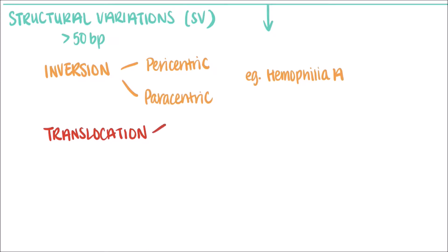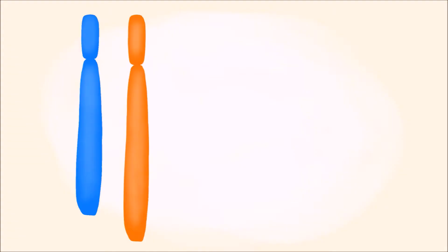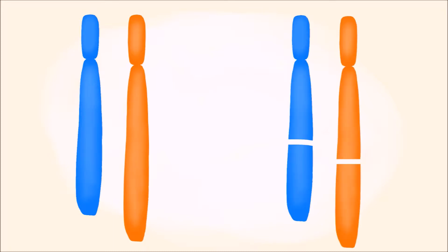Like inversions, there are two types of translocations. Reciprocal translocations are when two chromosomes swap regions of their genetic material. So here, these blue and orange chromosomes might both have a region break off, and rejoin with the other chromosome. I drew these chromosomes at different lengths to highlight that they are non-homologous.